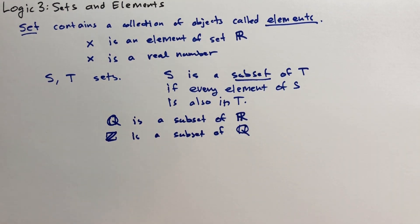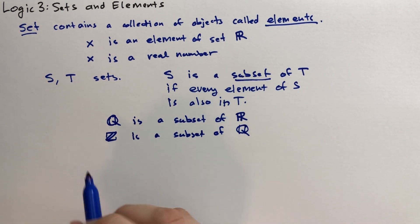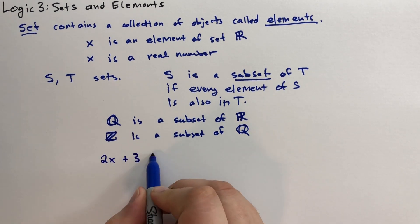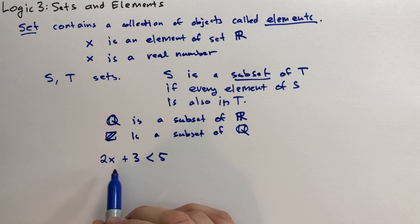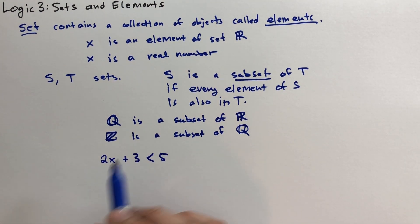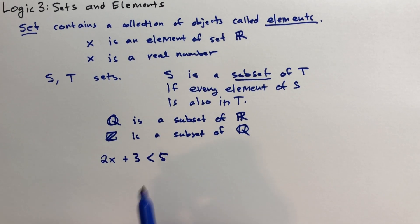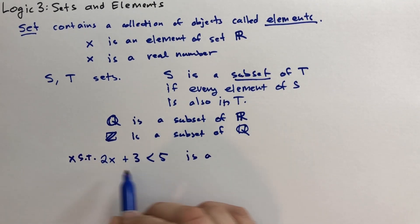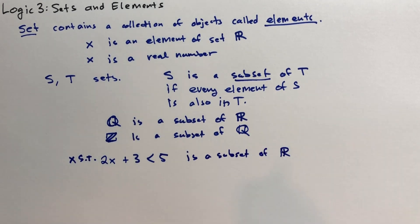The set of all real numbers X, such that 2X plus 3 is less than 5, is a subset of all real numbers. Let me show you what that looks like. So if we have 2X plus 3 is less than 5, all X would satisfy this equation, would it? No. This is a subset of the real numbers, because there's certain X that wouldn't satisfy this. If I chose 2 for X, that 2 times 2 is 4 plus 3, that'd be 7, that'd be greater than 5. So this is a subset. So X such that 2X plus 3 minus 5 is a subset of R. It's not all real numbers, but it's a large number of them.